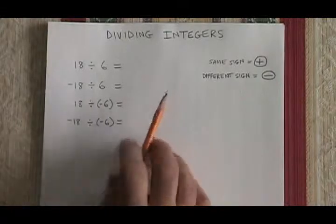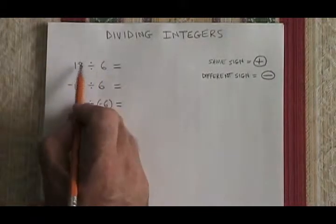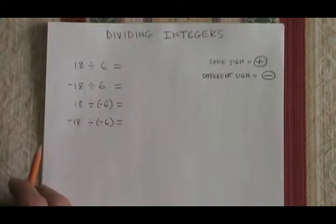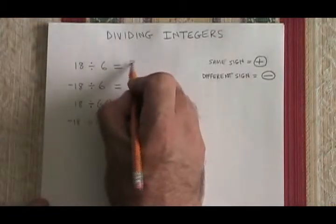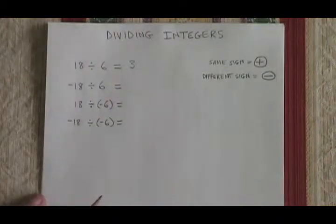Dividing integers works with the same rules as multiplying integers. 18 divided by 6 is a question we've seen before. It's equal to 3. Since they're both positive, there's no special rule we have to apply.